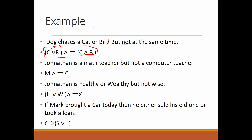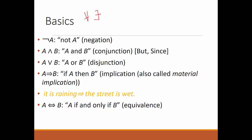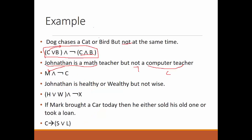'Jonathan is a math teacher but not a computer teacher' — M represents Jonathan is a math teacher, C represents Jonathan is a computer teacher. 'But not' gives us NOT C, and there has to be an AND operator between them, so: M AND NOT C. When we hear words like 'but' or 'since,' remember we use a conjunction.